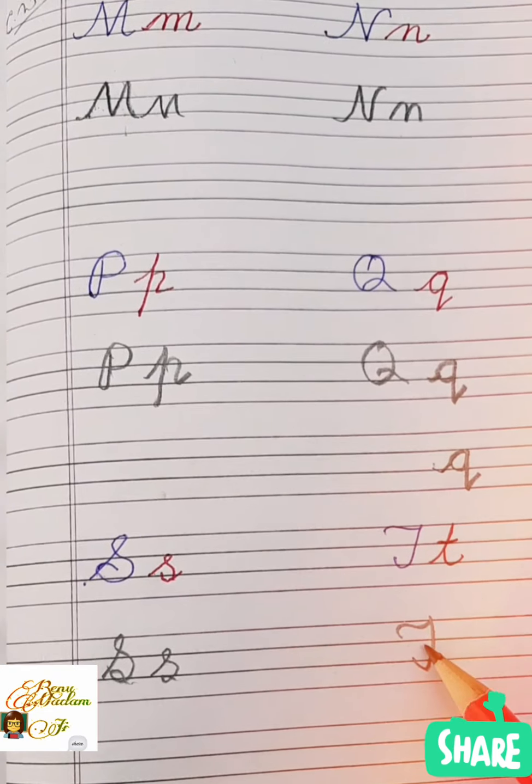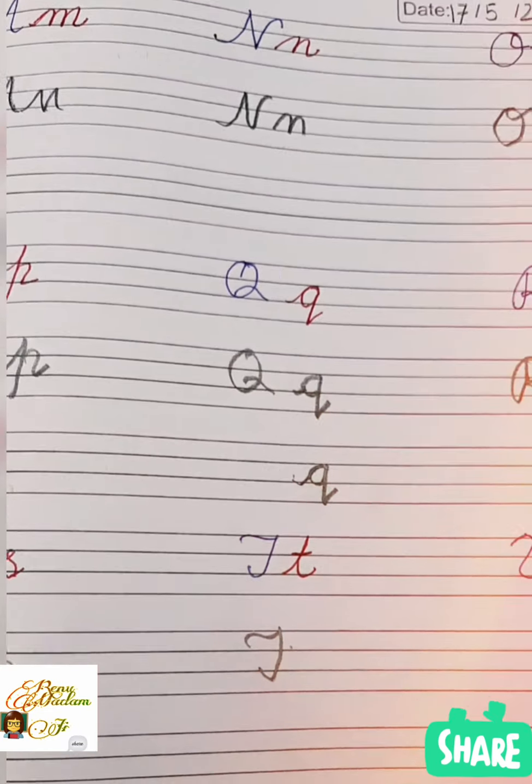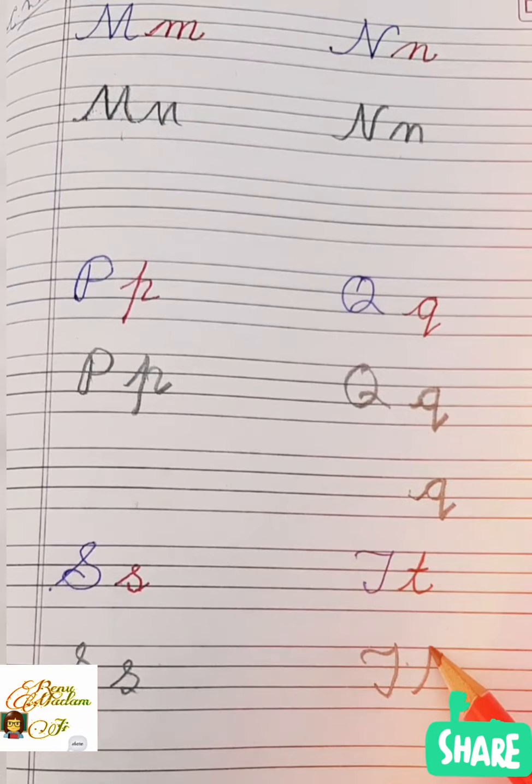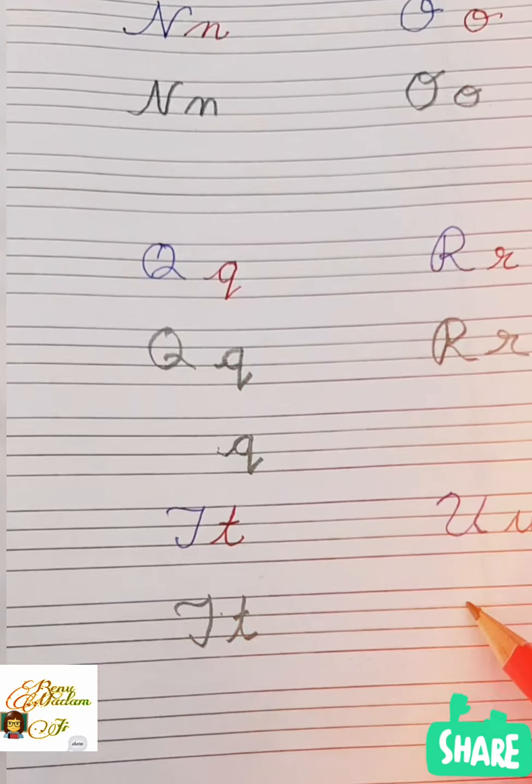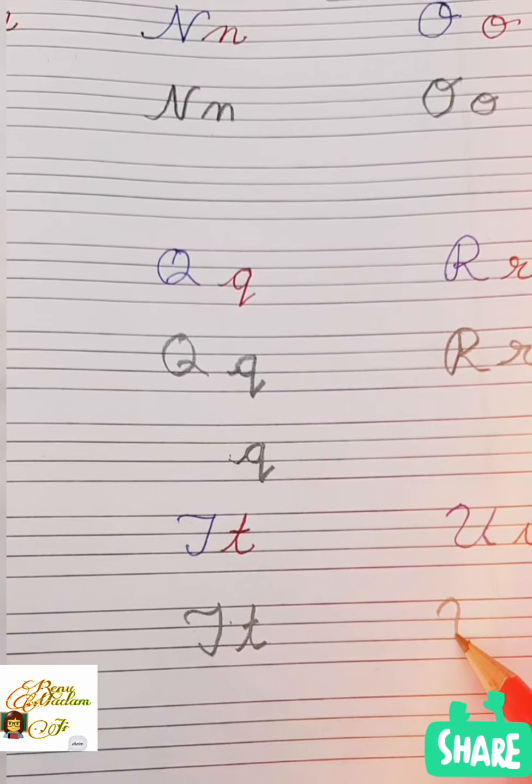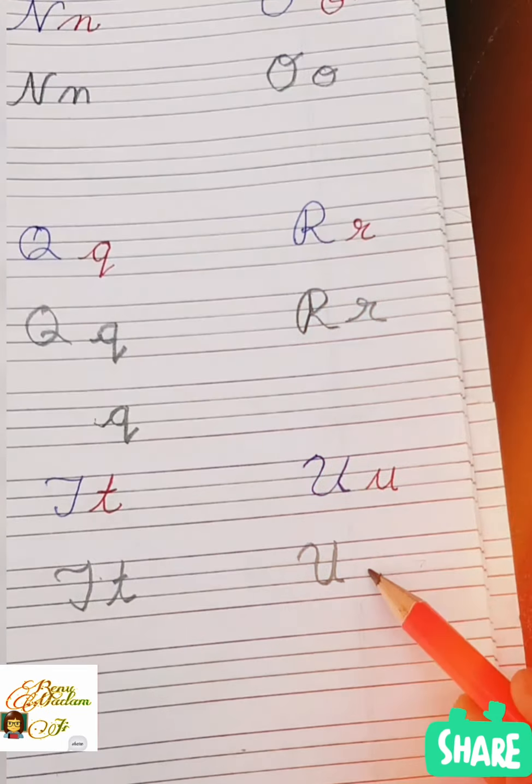And T is very easy to write. Then write small U. Now work is completed. You have to do just like that.